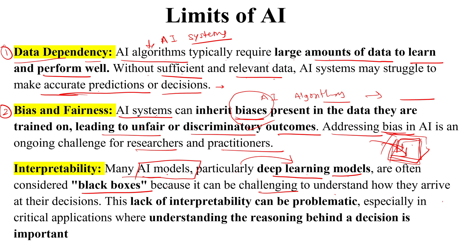It is difficult to understand how these models arrive at their decisions — we cannot interpret in what way the decision was taken. This lack of interpretability can be problematic, especially in critical applications where understanding the reasoning behind a decision is important. This can be a challenge for developers to understand how they have arrived at that conclusion.